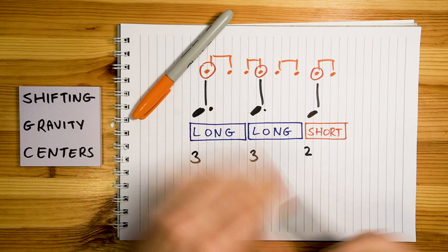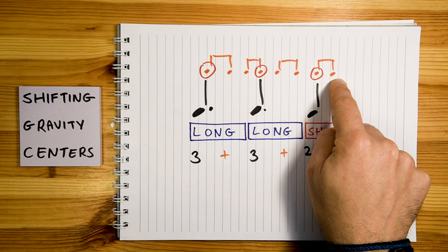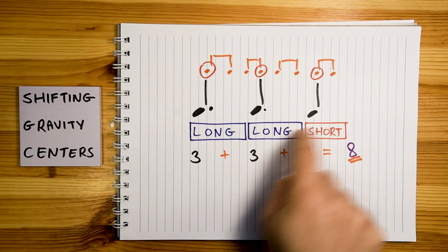You can dial in any set of numbers that you want, as long as you keep the ratios intact. So long, long, short stays long, long, short — which means you'll have two identical numbers (long, long) and then one smaller number (short). For example, 3-3-2, which is also where we started: 1-2-3, 1-2-3, 1-2-1.